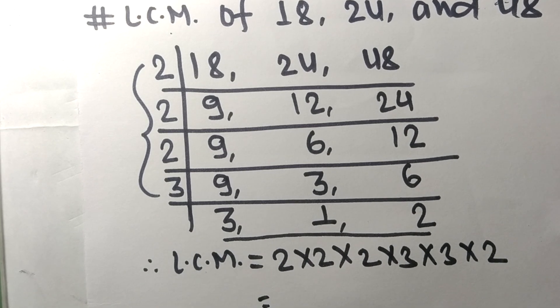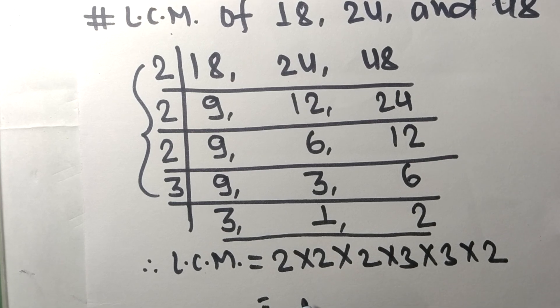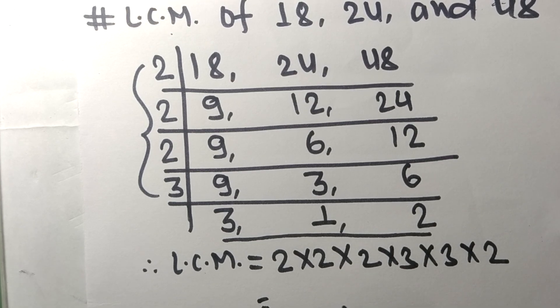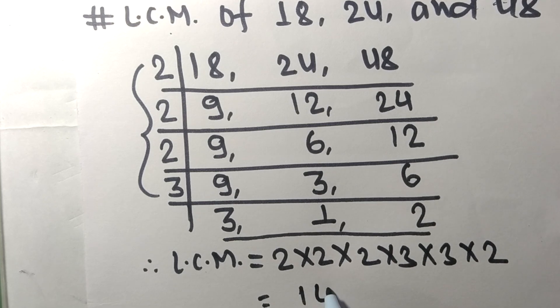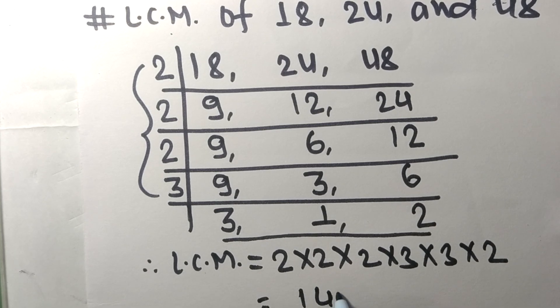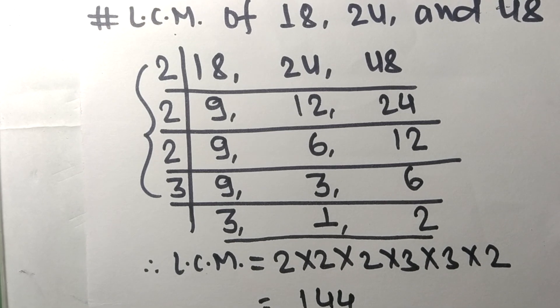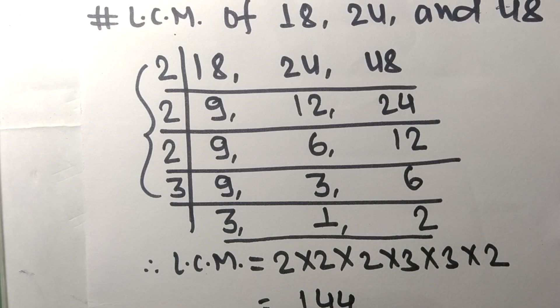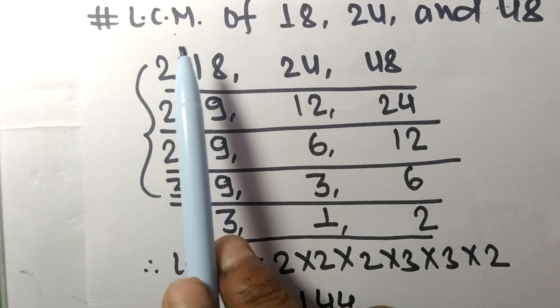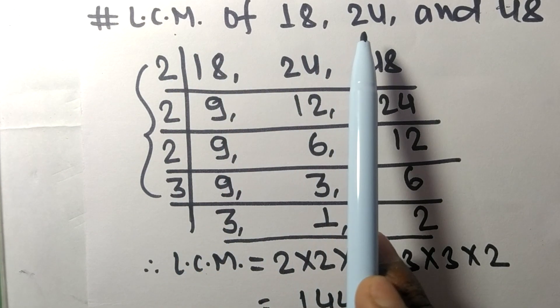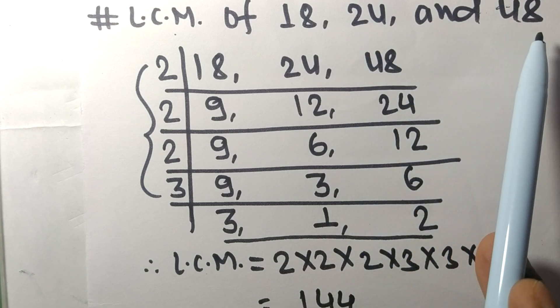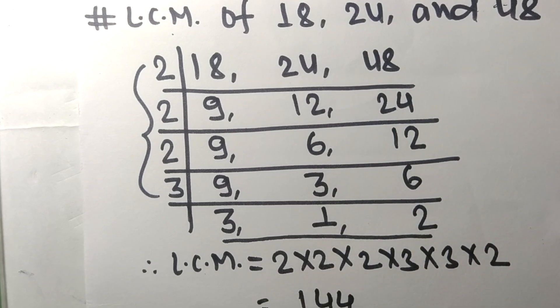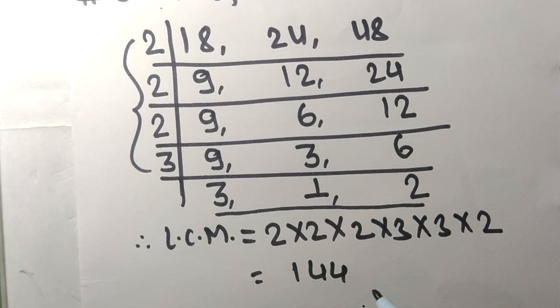By multiplying all these numbers we get 144. So 144 is the LCM of 18, 24, and 48. So this much for today and thanks for watching.